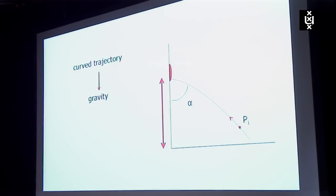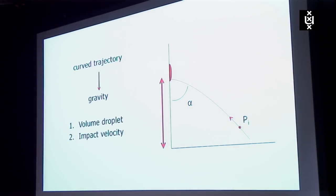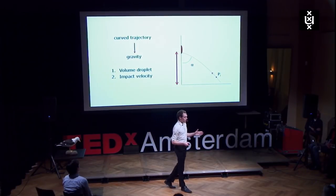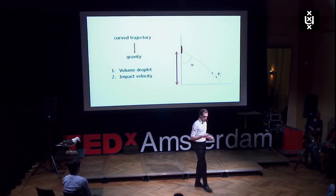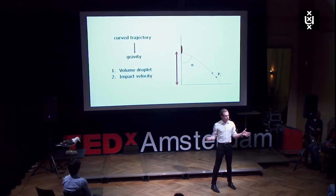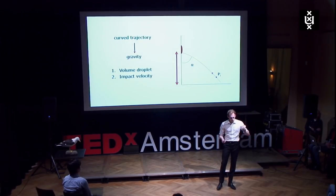So what we are trying to do is to take gravity into account with this calculation, because we want to determine this curved trajectory. But to do so, we need two extra parameters: the volume of the droplet and the impact velocity of those droplets. Well, the volume we can determine fairly easily. We've got a dried blood stain on a wall. We take a 3D scan of that droplet, and we'll get a volume back. So yes, we can determine that.